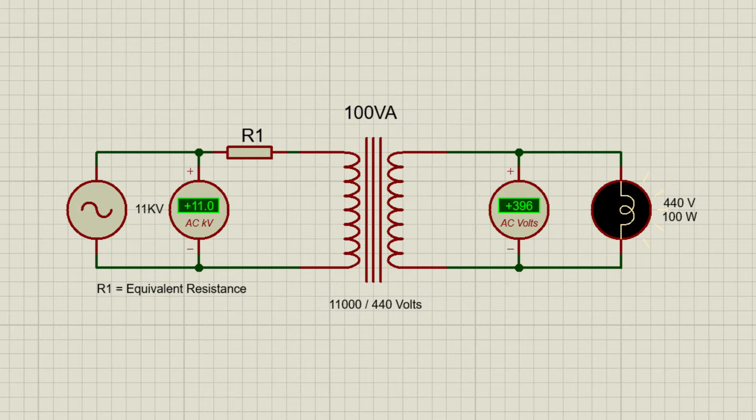Imagine a secondary winding rated at 440 volts that's fully loaded. If the measured voltage drop is 44 volts, then your percentage voltage drop is 10%. This translates to a transformer percentage impedance of 10%.